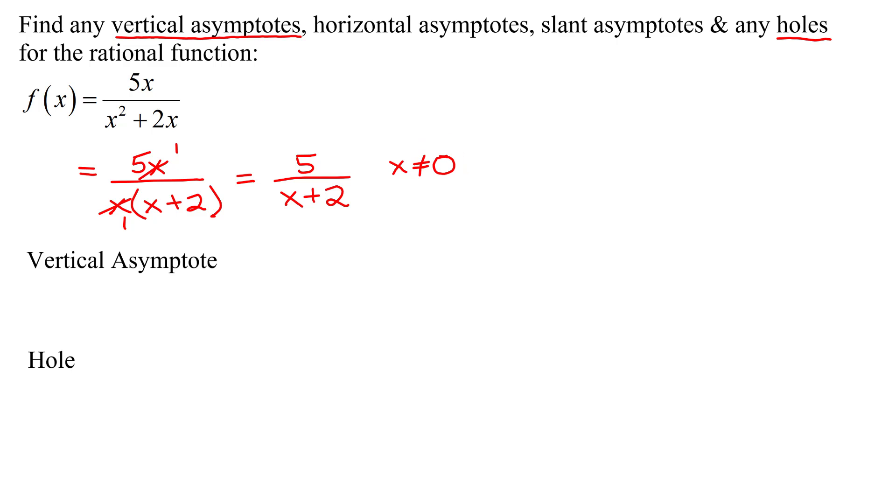So now I've simplified my function, I can find the vertical asymptotes and holes. Vertical asymptotes are found by looking at the simplified form of the function and setting the denominator equal to 0.